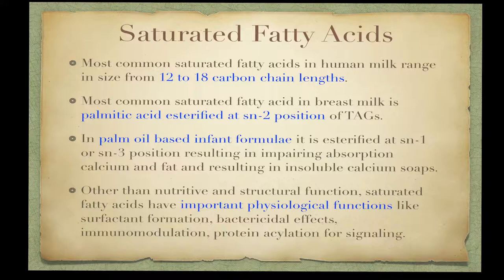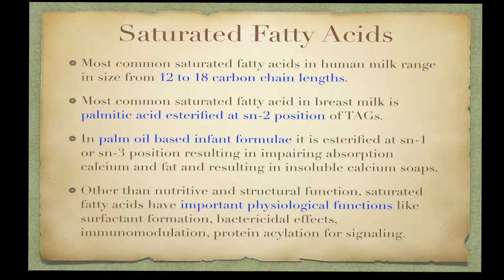Saturated fatty acids not only provide energy but also have structural and metabolic functions. They range in size from 6 to 24 carbons, but the most common in infant diets have 12, 14, 16, and 18 carbon chain lengths. Most of the saturated 16-carbon fatty acid — palmitic acid — in breast milk is located at carbon 2 of triacylglycerol. In palm oil-based infant formula, palmitic acid is located at C1 or C3, impairing absorption of calcium and fat and resulting in insoluble calcium soaps, which negatively influence early bone accretion.